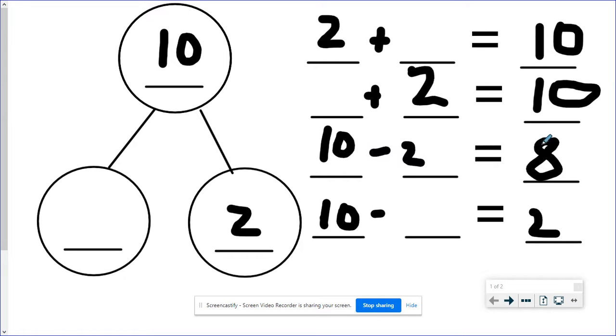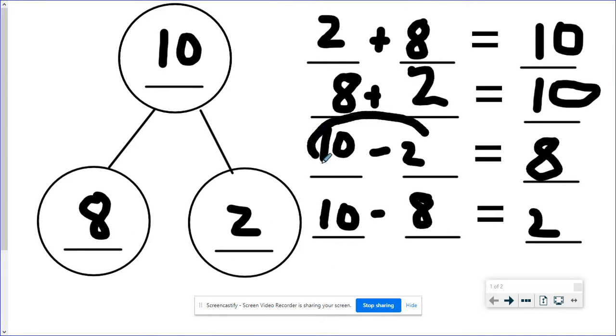If 10 subtract 2 equals 8, then 2 plus 8 equals 10, 8 plus 2 equals 10, and 10 subtract 8 equals 2. So I can come over here to my number bond and fill in the missing part. So I was solving for this missing part and I did it by using a related fact. If 2 plus 8 equals 10, then 10 subtract 2 equals 8. Easy, right?